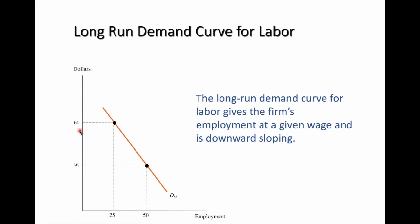For example, when the level of wage rate is at W0, then the level of long-run demand for labor is 25 workers. And when the wage rate declines to W1, the level of employment rises to 50 workers.